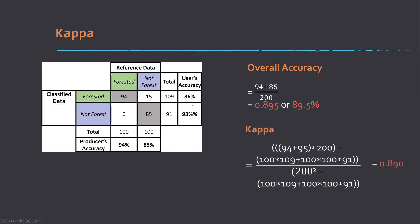Here's an example with the second table. The correct, 94 and 85 divided by the total. There's our overall accuracy as a proportion and as a percentage. And then kappa, it's the same thing, but we take our correct, multiply by total, subtract that factor, and then the total squared to subtract the factor. The factor is 100 times 109 plus 100 times 91. And you can see the slight drop there relative to overall accuracy.